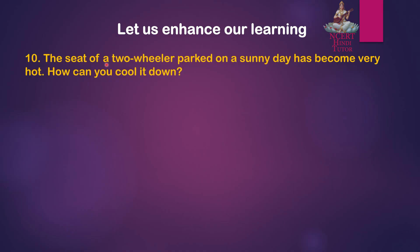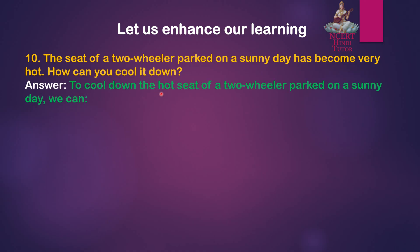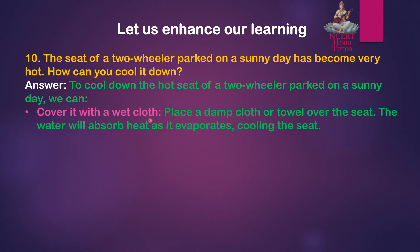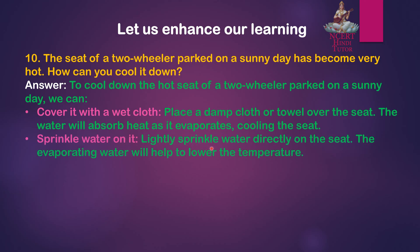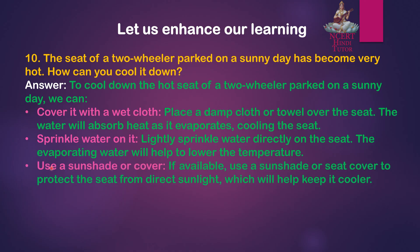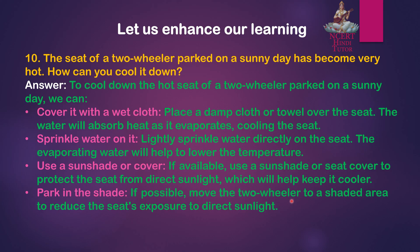Question 10: The seat of a two-wheeler parked on a sunny day has become very hot. How can you cool it down? Answer: To cool down the hot seat, we can: First, cover it with a wet cloth — place a damp cloth or towel over the seat; the water will absorb heat as it evaporates, cooling the seat. Next, sprinkle water on it — the evaporating water will help lower the temperature. Also, use a sun shade or seat cover to protect the seat from direct sunlight. If possible, park the two-wheeler in a shaded area to reduce exposure to direct sunlight.